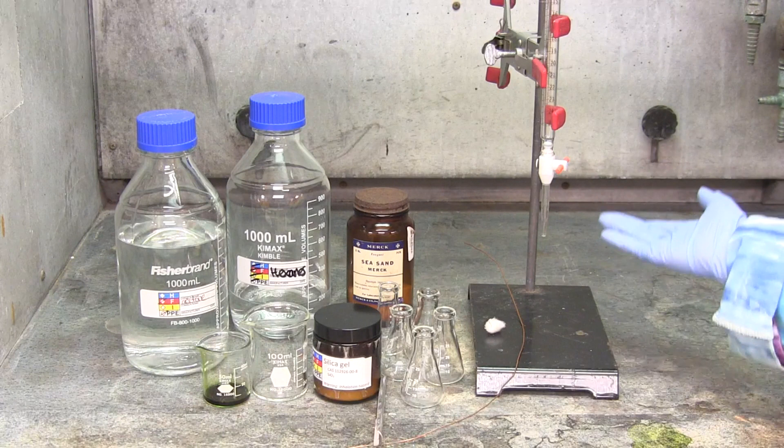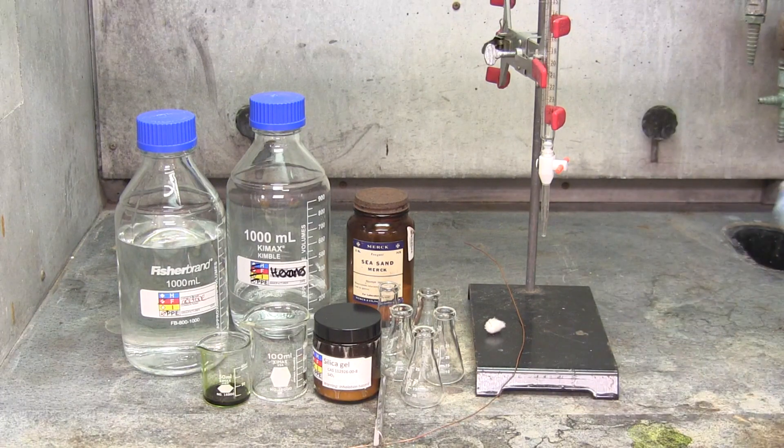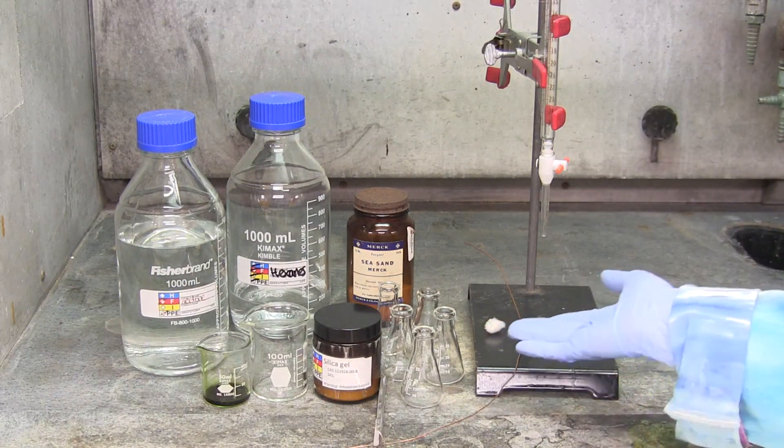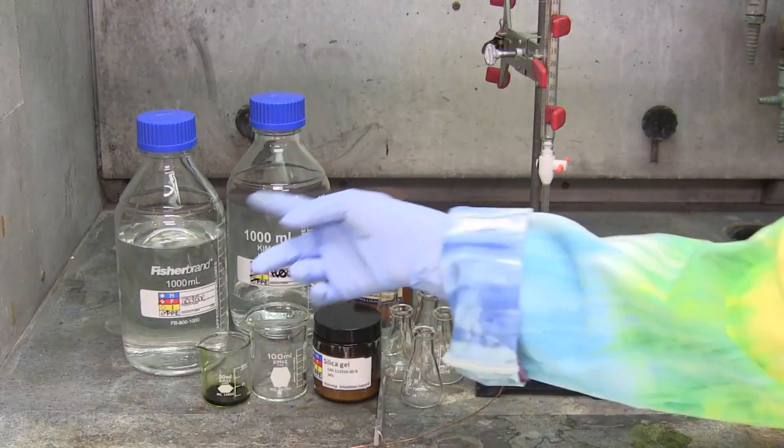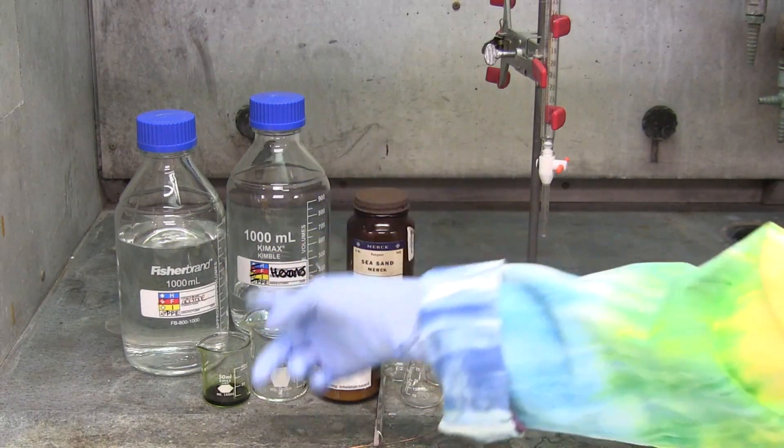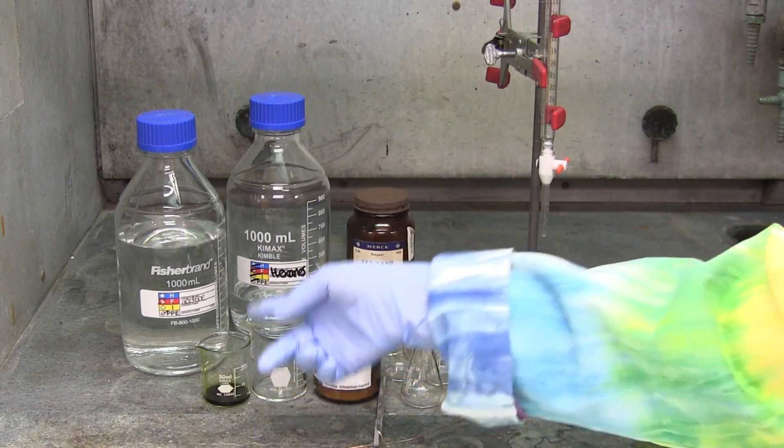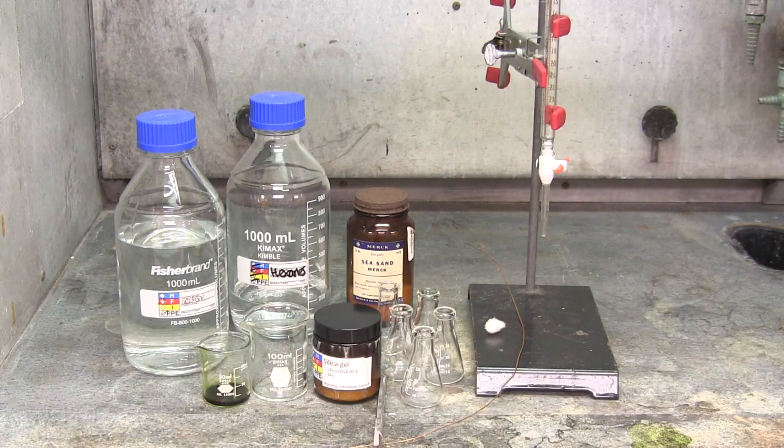The materials you will need are a burette, a stand, a copper wire, a wad of cotton, some small Erlenmeyer flasks, the two solvents acetone and hexanes, sand, silica gel, and the sample spinach.